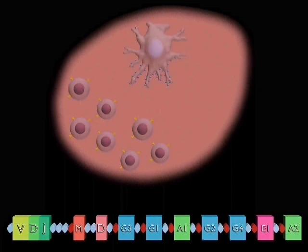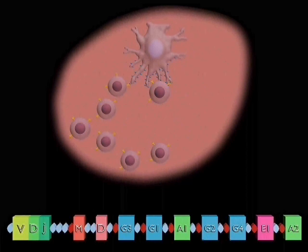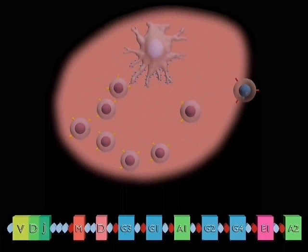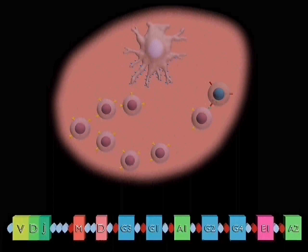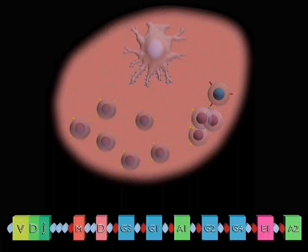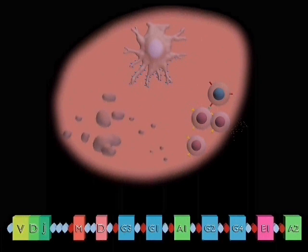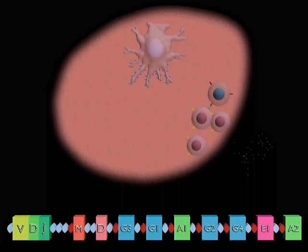Follicular dendritic cells in the germinal center hold stores of antigen on their surface. B cells compete with each other for the antigen, and only B cells whose mutations have produced higher affinity antibodies will compete effectively for the limiting amount of antigen. This is now processed and presented to T cells, which signal division and differentiation. But B cells with low affinity antibodies have no antigen to present to the T cells and die by apoptosis.